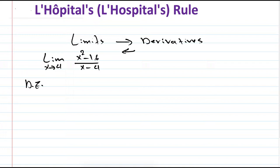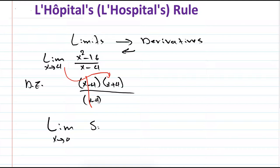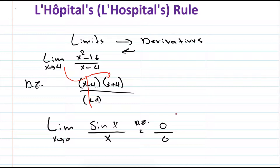So what would we do? We could factor — that is another method. We would factor into (x minus 4)(x plus 4) over (x minus 4), the common factors cancel, and we just find the limit of x plus 4, which equals 8. However, suppose we have the limit as x approaches 0 of sine of x over x. If you directly evaluate, you get 0 over 0, which is not acceptable. It is called an indeterminate form.